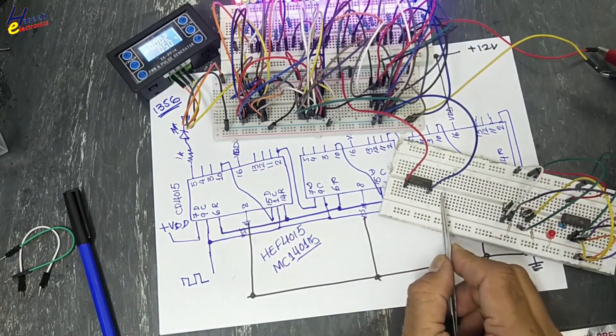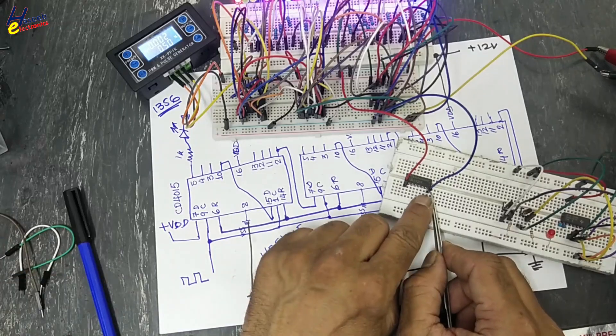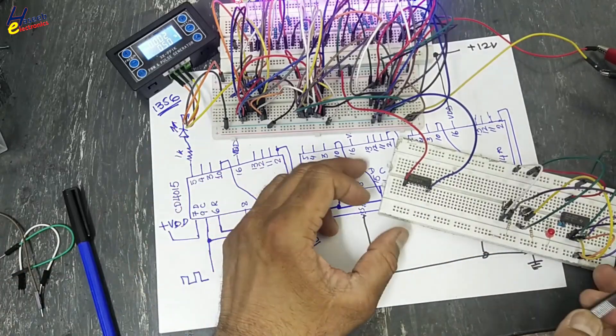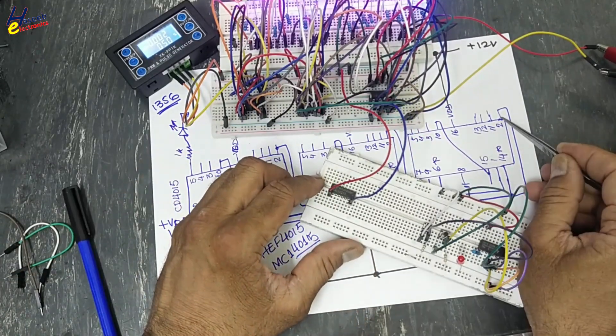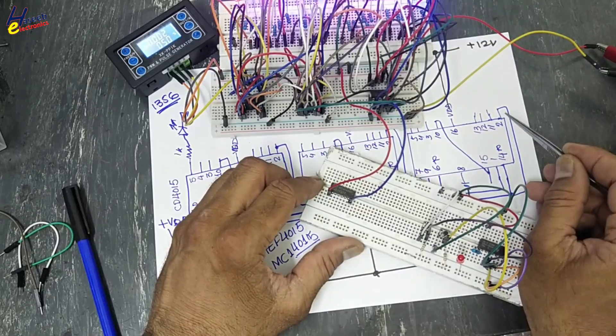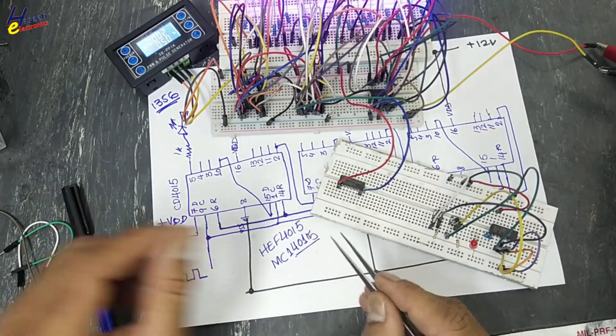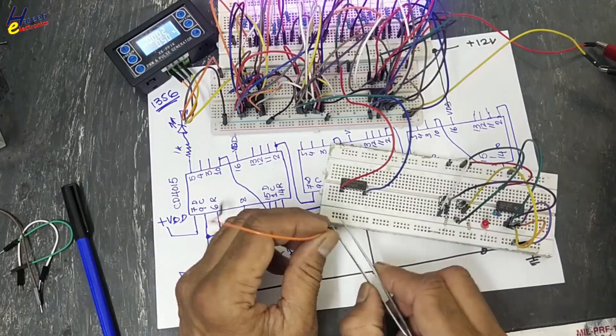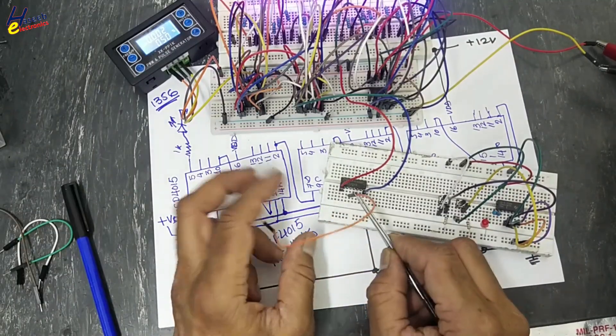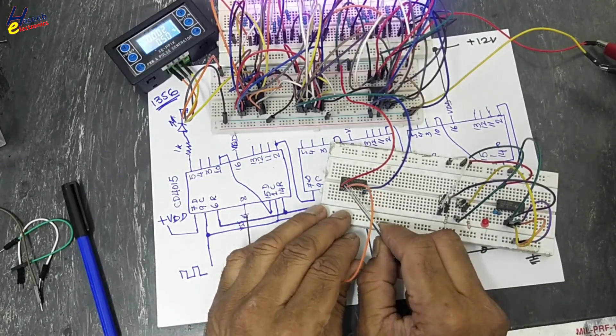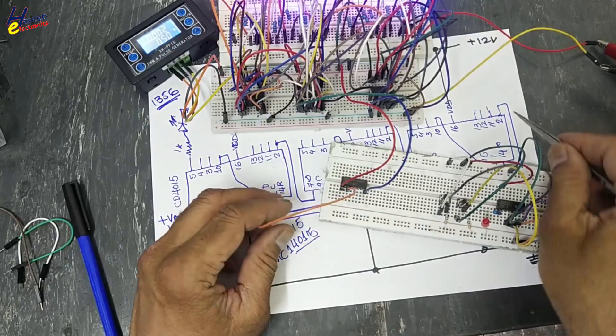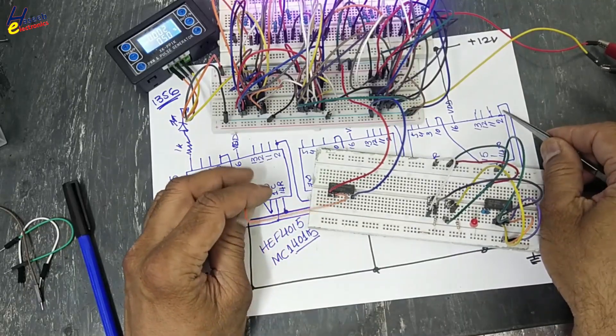Now we applied biasing to this IC. Pin 1 positive. Pin number 8, ground. Now the last test output of this circuit will be connected to pin number 3. Pin number 3 that is inverter input.